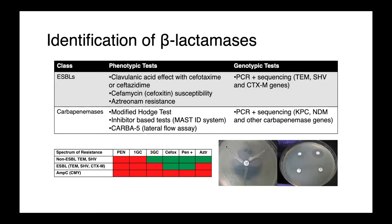So how do we identify all of these beta-lactamases that we've discussed? Our first clue as usual is going to be phenotypic. We're going to see resistance to a broad spectrum of beta-lactam type drugs. Once we have our suspect broad-spectrum beta-lactamase producer, we can identify them using some phenotypic tests.